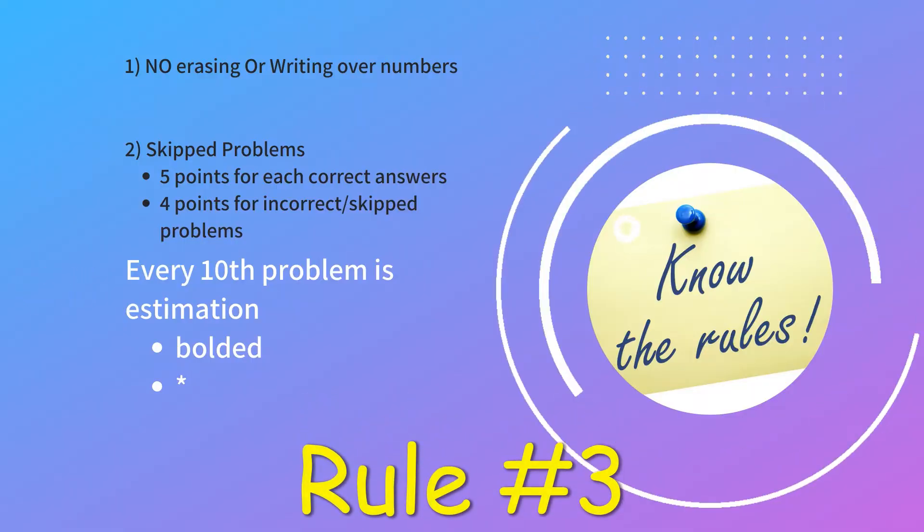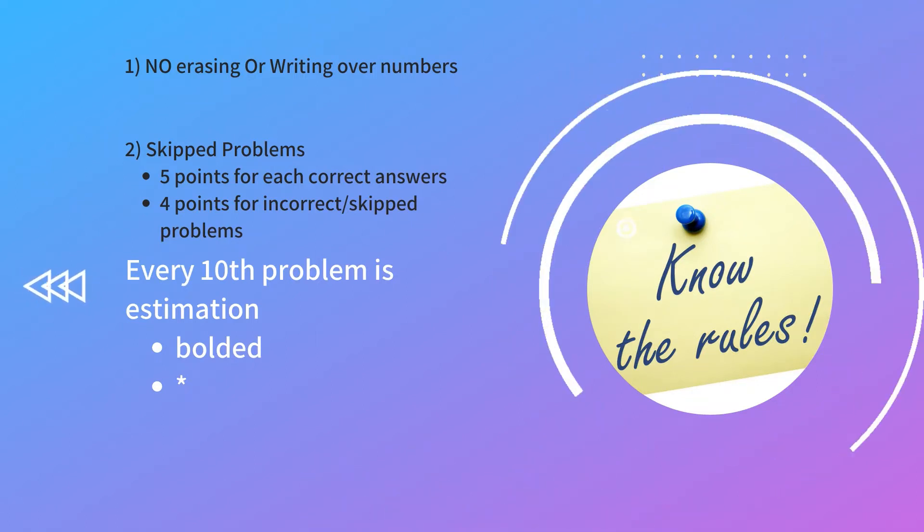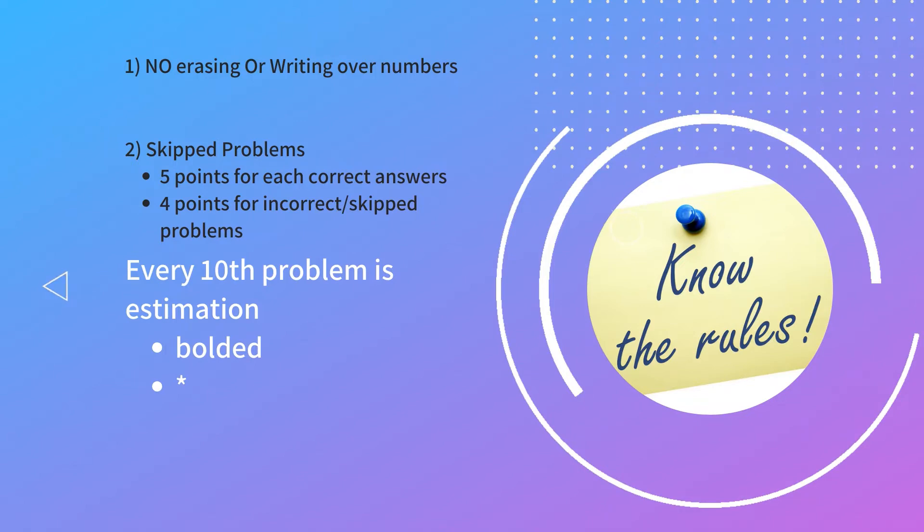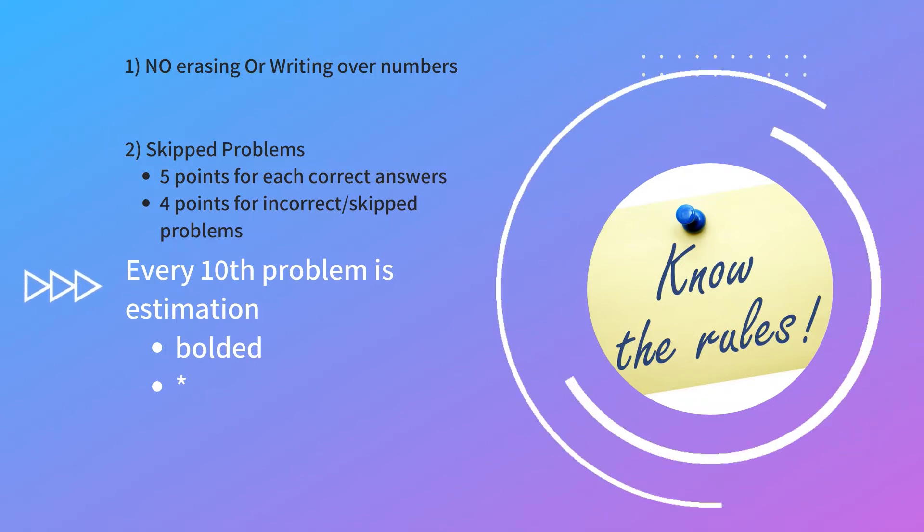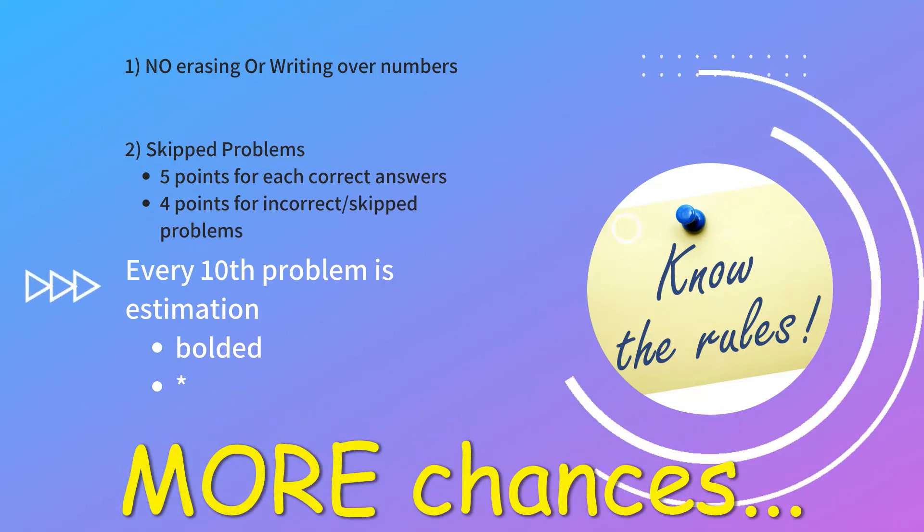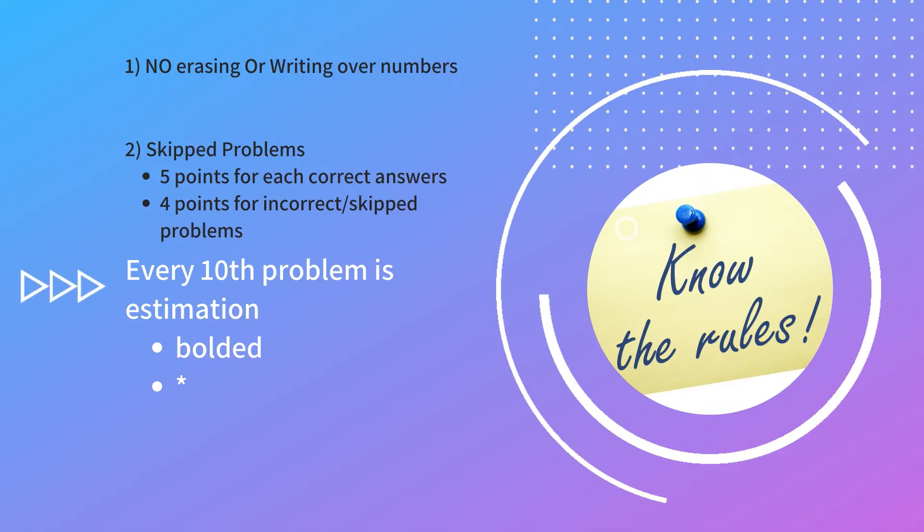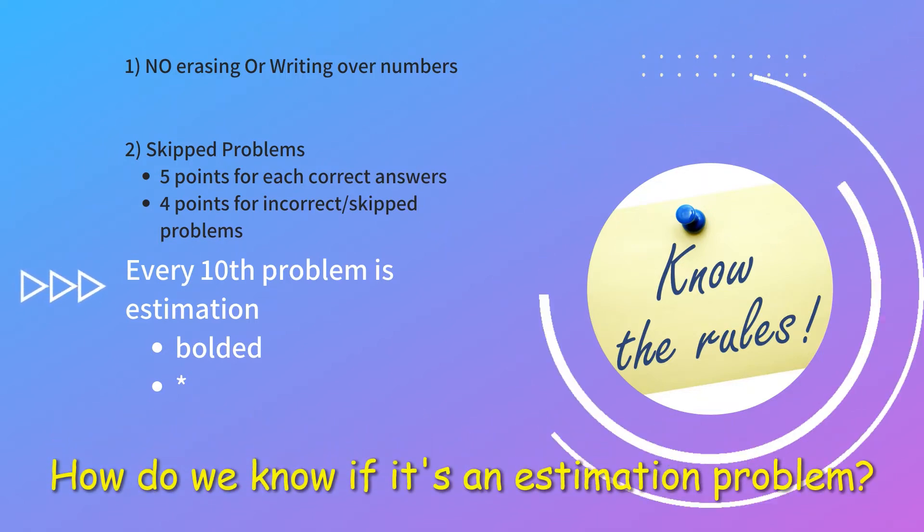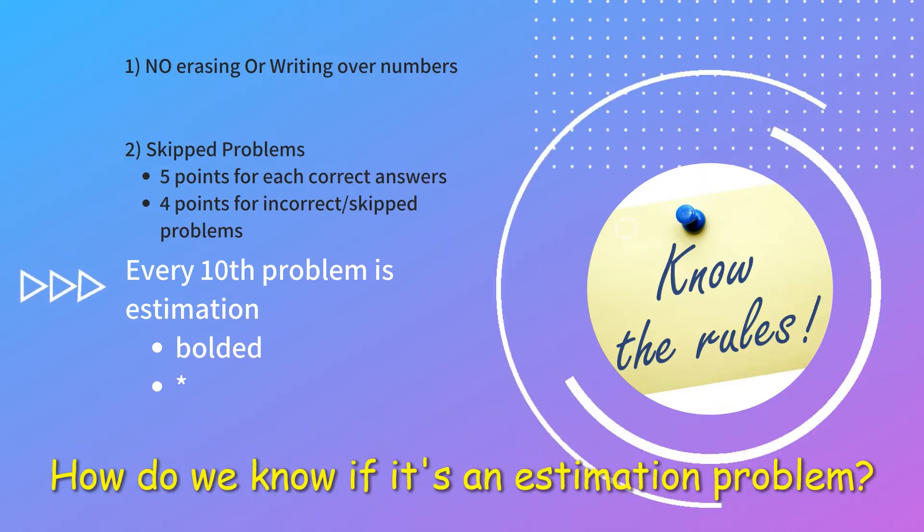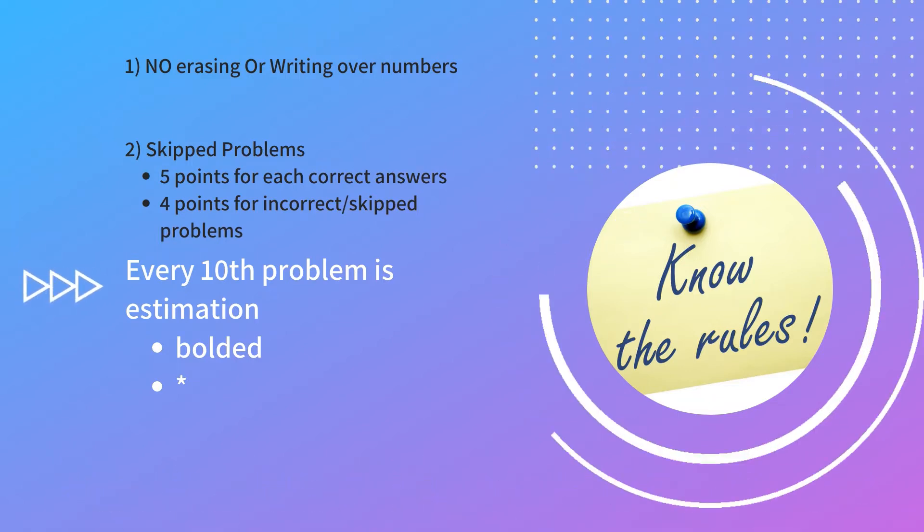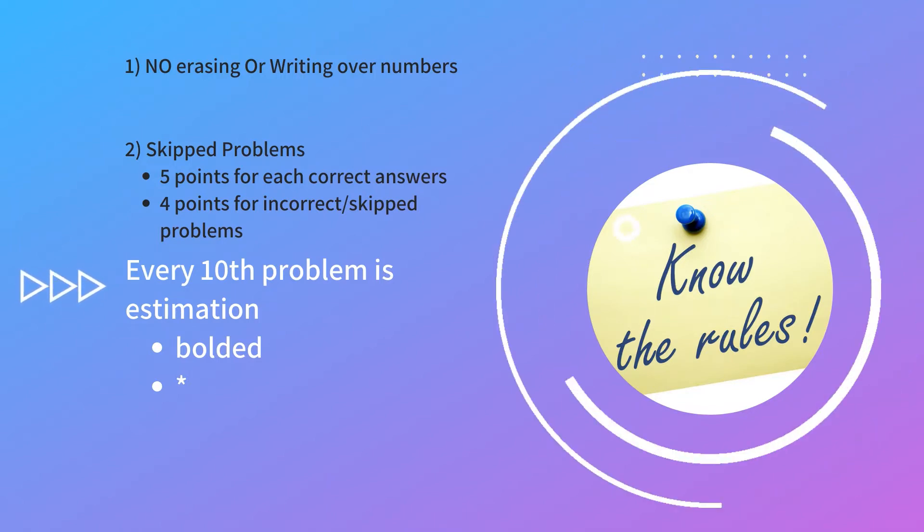Another rule is that every 10th problem is an estimation problem. My advice for any students who are competing in NumberSense is to at least attempt the 10th problem. Even though it looks complicated, it is an estimation, that means that they're going to give you a range of different answers compared to those other questions that only have one correct answer. It will not tell you that it's an estimation problem, but the writing will be a little different. They'll either be bolded or they will have an asterisk beside them.